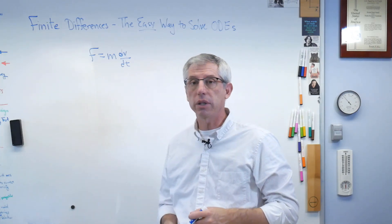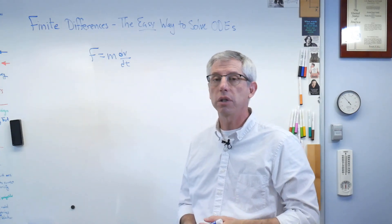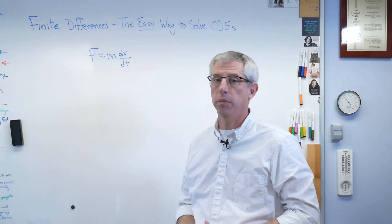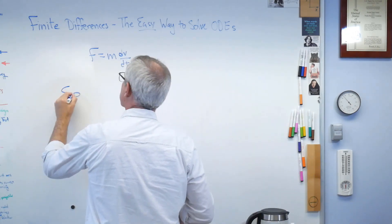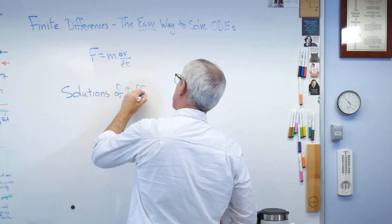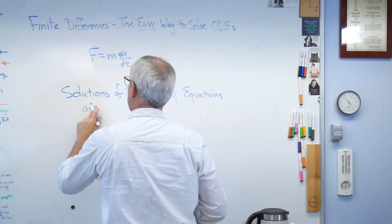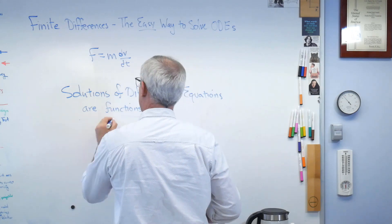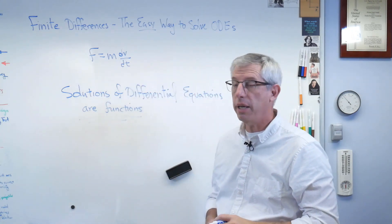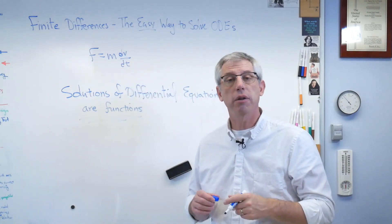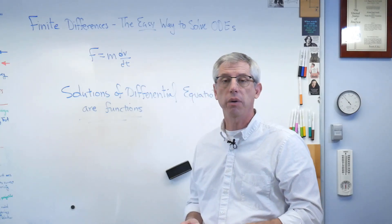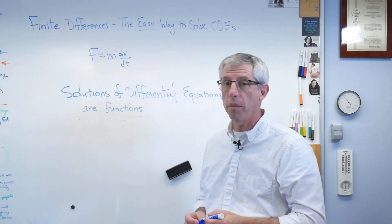Now, because differential equations have slopes in them, their solutions are functions, not numbers. Numbers don't have slopes. Okay, big idea here is when you're solving a differential equation, you're trying to find a function that makes the equation true, not just a number.